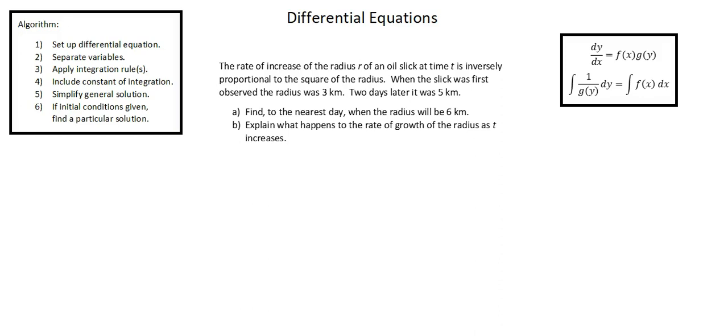Our problem reads: the rate of increase of the radius r of an oil slick at time t is inversely proportional to the square of the radius. When the slick was first observed, the radius was 3 kilometers. Two days later, it was 5 kilometers. Find, to the nearest day, when the radius will be 6 kilometers. And explain what happens to the rate of growth of the radius as t increases.